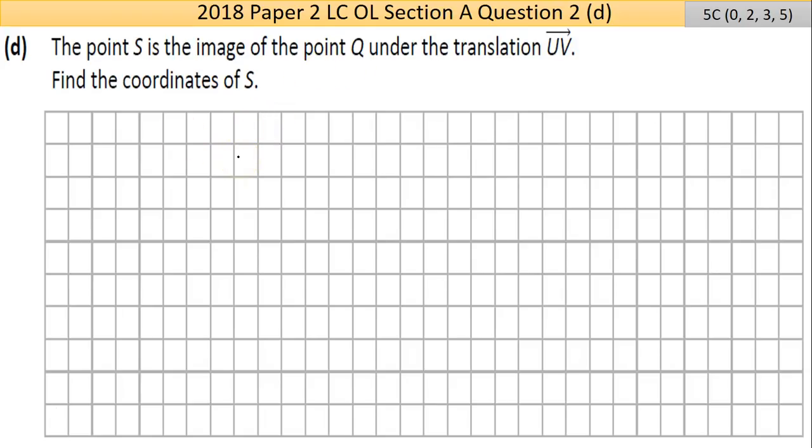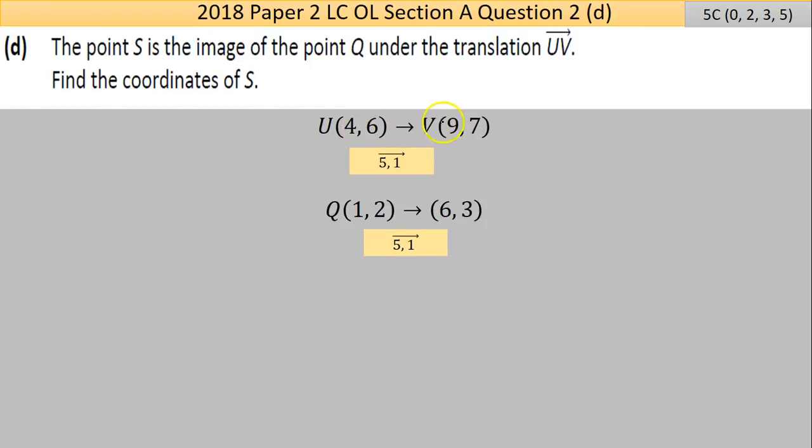I have U travelling as far as V. It moves up 5, +5 on the x, +1 on the y for that movement to happen. So Q is moving the exact same distance—it's moving 5 up on the x, 1 up on the y—so you end up with the point (6,3) and that's the point S.